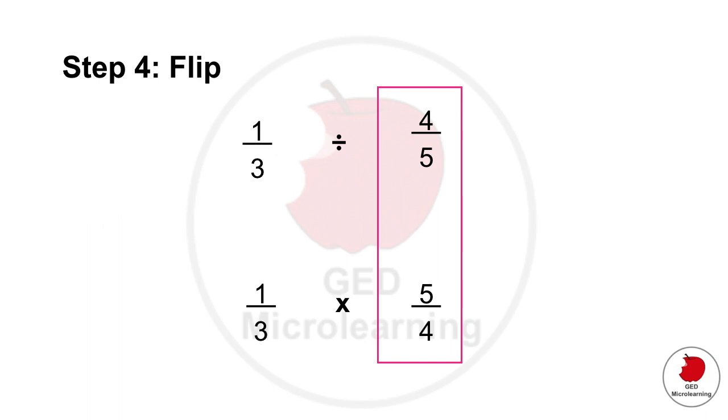So why are we doing this? Well, we're doing this because in math there is a rule or a concept that says that when you're dividing a fraction by a fraction you're actually multiplying by the reciprocal.